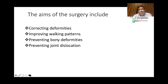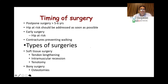Surgically, we work to correct deformities, improve the walking pattern, prevent bony deformities or joint dislocation, and treat bony deformity or joint dislocation if it has already occurred. Regarding timing, we usually start surgery by the age of five or six. However, if there is a hip at risk, hip subluxation, dislocation, or a severe contracture preventing walking, we can operate at a much earlier age.